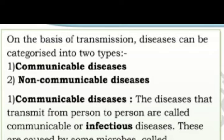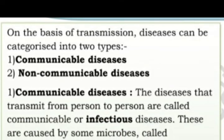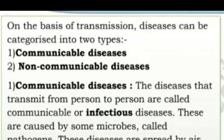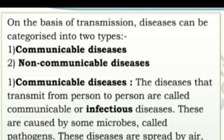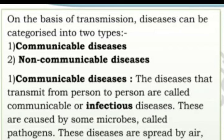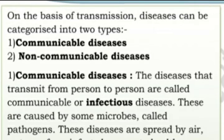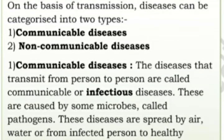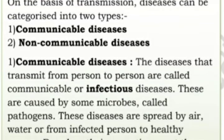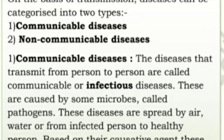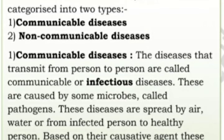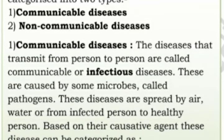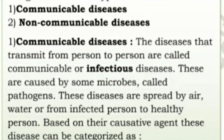On the basis of transmission, diseases can be categorized into two types: communicable disease and non-communicable disease. Communicable diseases are those that transmit from person to person, and are called communicable or infectious diseases.